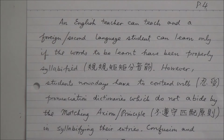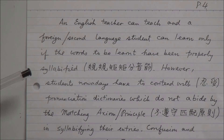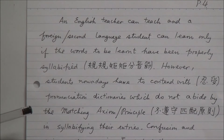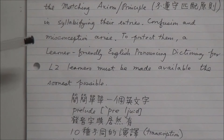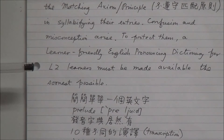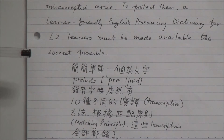An English teacher can teach and a foreign or second language student can learn only if the words to be learned have been properly syllabified. However, students nowadays have to contend with pronunciation dictionaries which do not abide by the matching axiom or principle. In syllabifying their entries, confusion and misconception arise. To protect them, a learner-friendly English pronouncing dictionary for L2 learners must be made available as soon as possible.